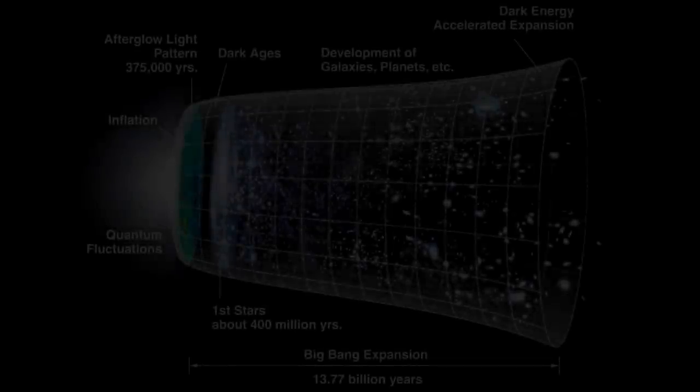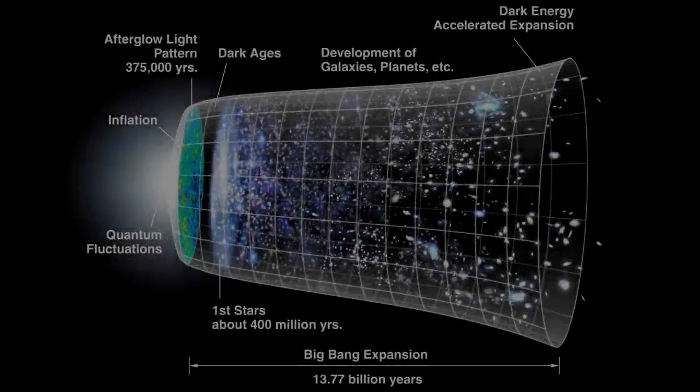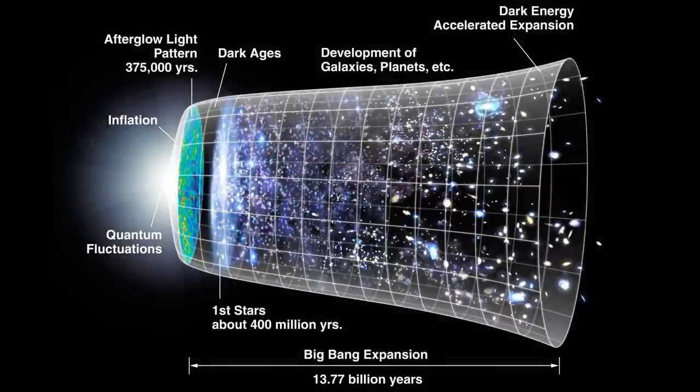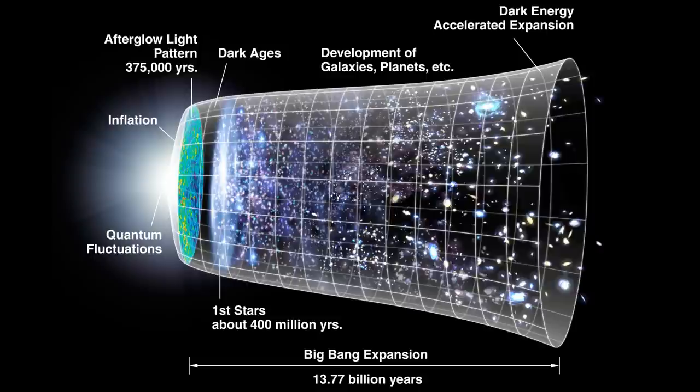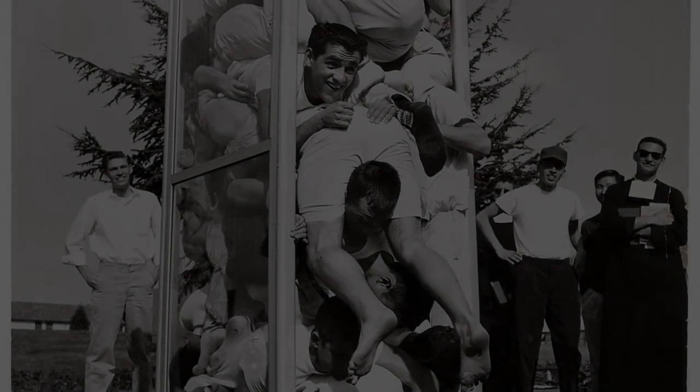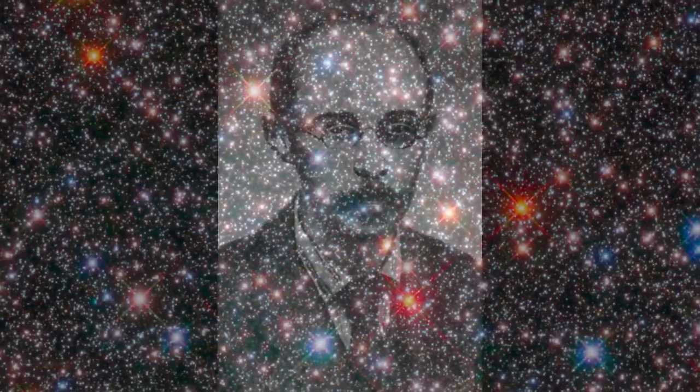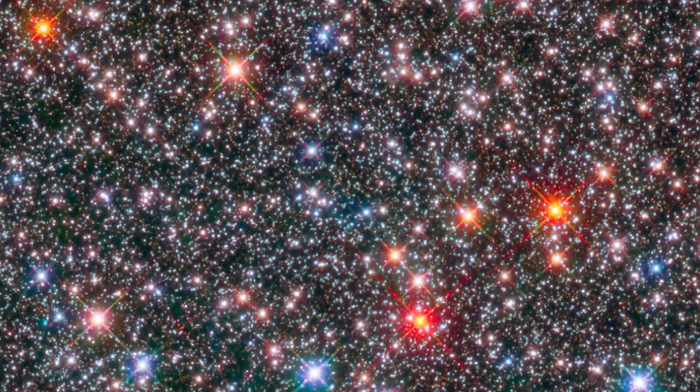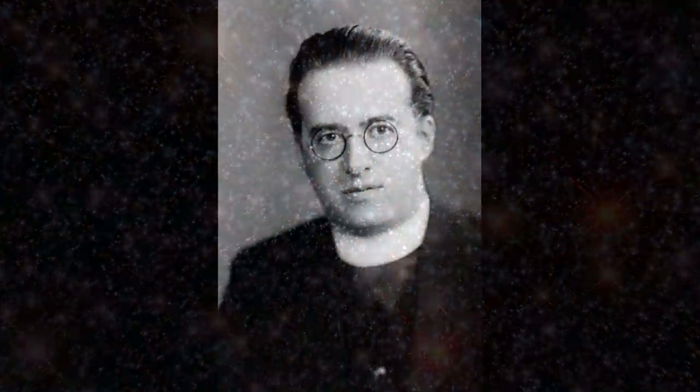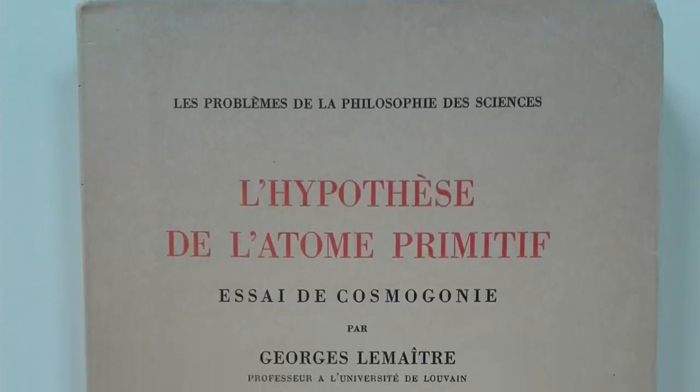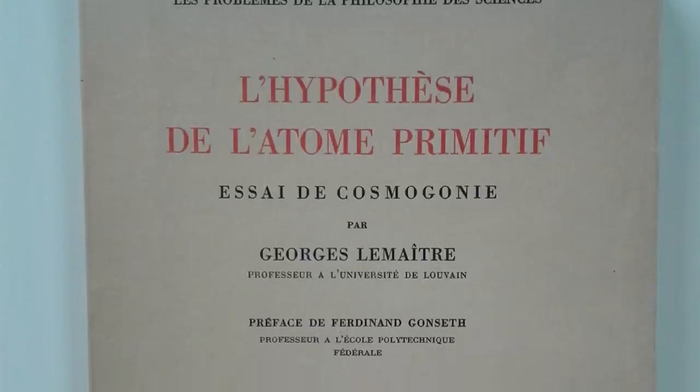The observable universe is a tiny part of the whole, 1927. If space is expanding and making everything drift apart, then earlier everything would be closer together. Rewind the clock far enough and everything would be squished together at an incredible density. In 1922, Alexander Friedman showed how Einstein's equations of general relativity could account for an expanding universe. In 1927, George Lemaitre connected the idea with Hubble's discovery of expanding space. Lemaitre called it the hypothesis of the primeval atom. Today we know it as the Big Bang theory.